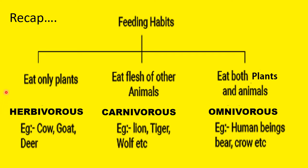These animals are called Herbivores because they eat only plants. Animals which eat the flesh of other animals are called Carnivores. For example, lion, tiger, wolf — they attack other animals and eat their flesh.